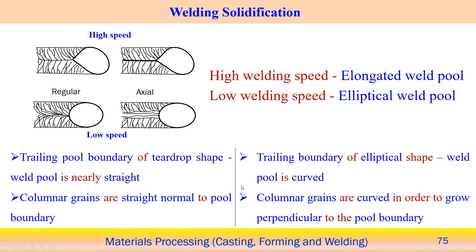When talking about solidification for the welding process, if you perform welding at very high speed, we can expect an elongated weld pool. The shape of the molten pool, when the welding torch is moving at very high speed or even slowly, gives this kind of elliptical profile. This kind of profile influences the type of solidification behavior associated with the welding process.